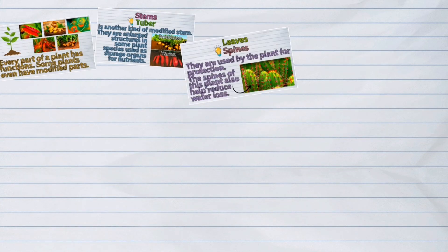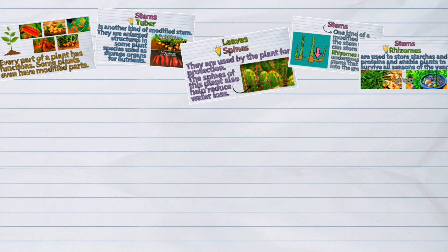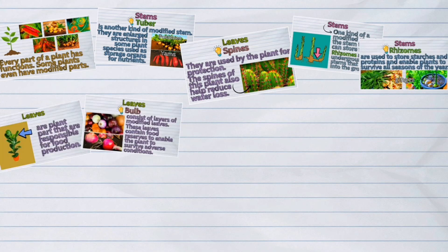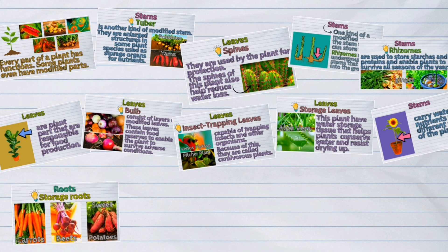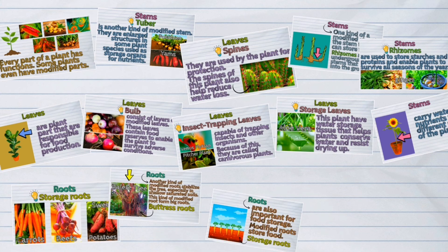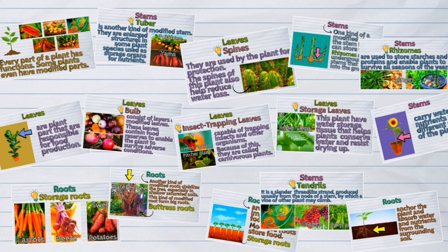And those were the modified parts of a plant. Most plants have modified parts for their protection, while some often display enlarged organs that develop into edible crops. Modified organs store vitamins and minerals that are important for human health.